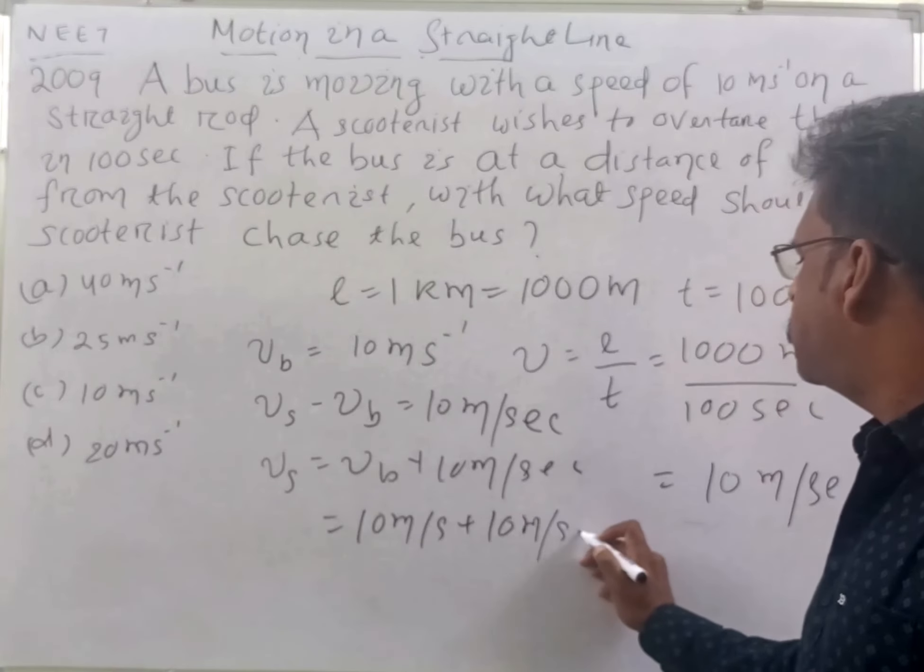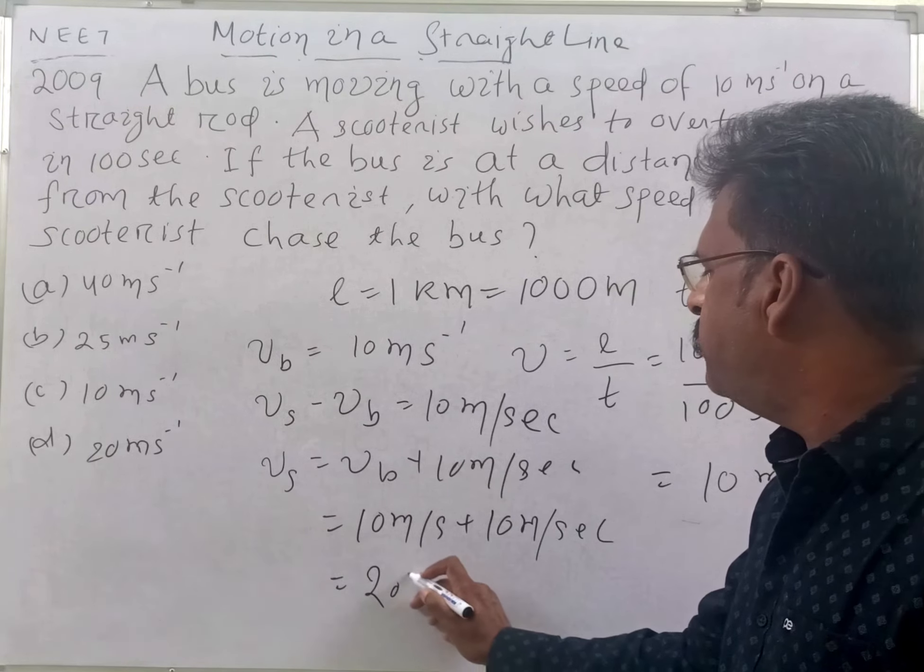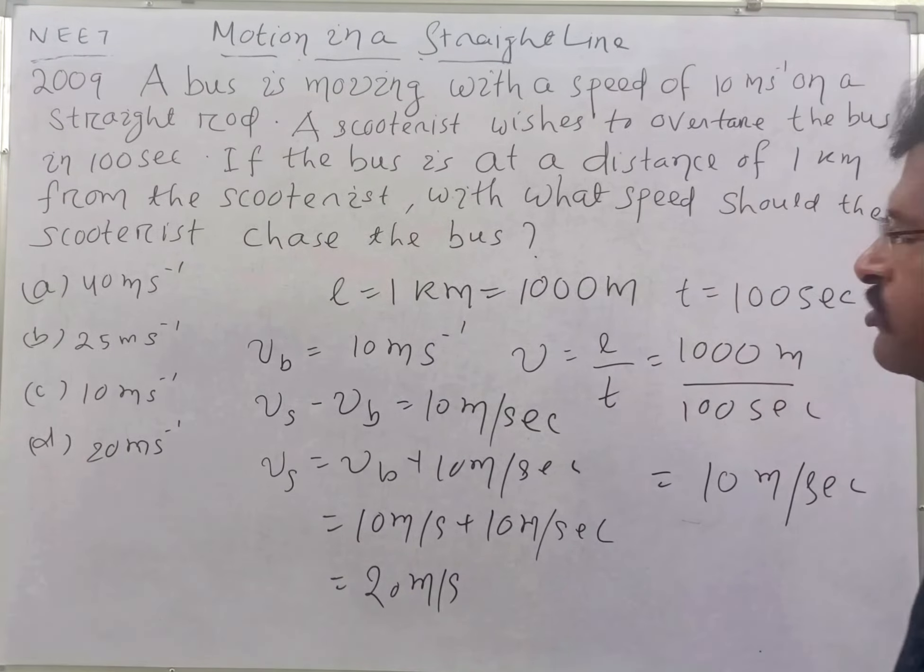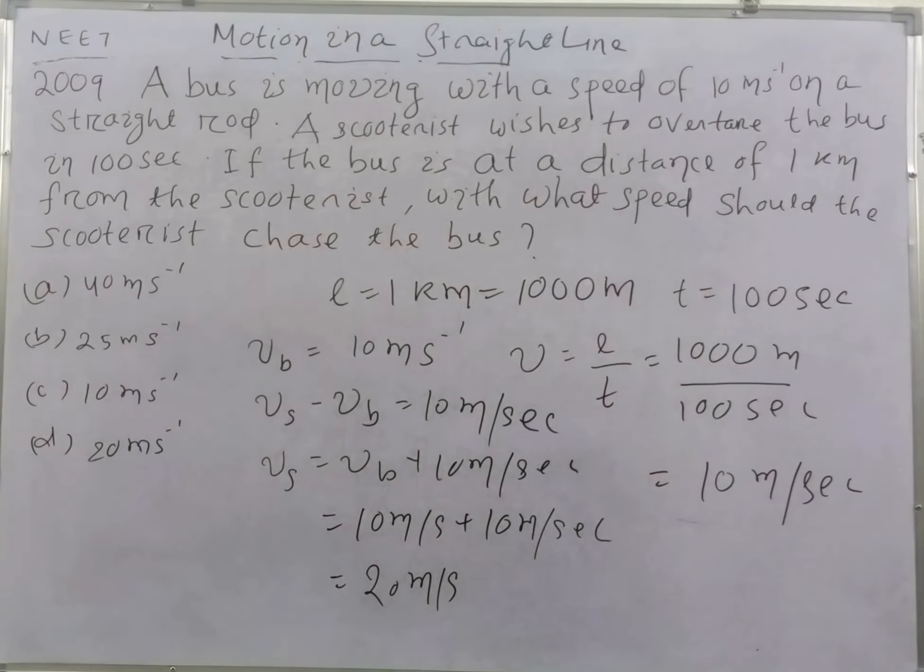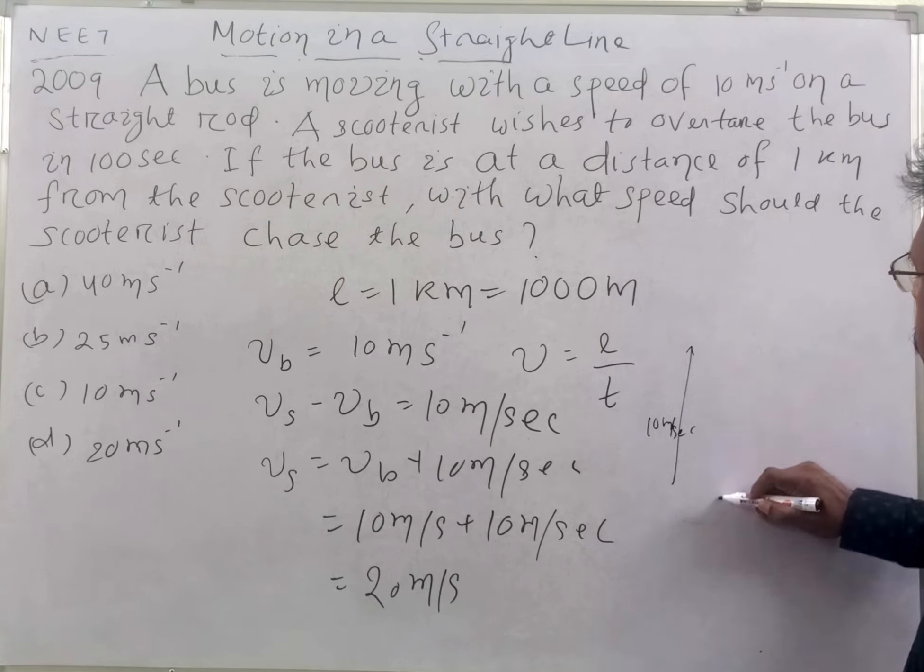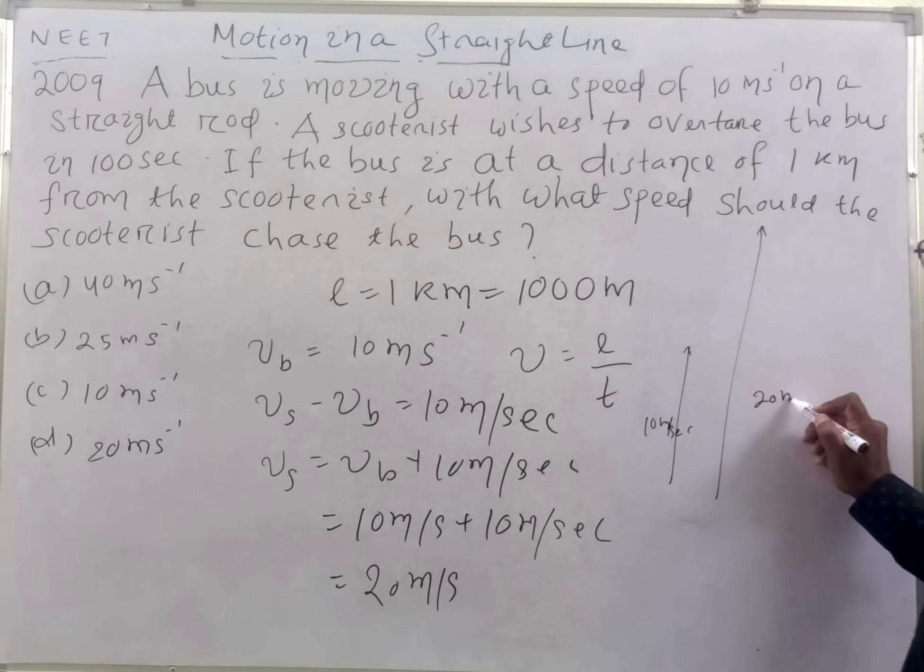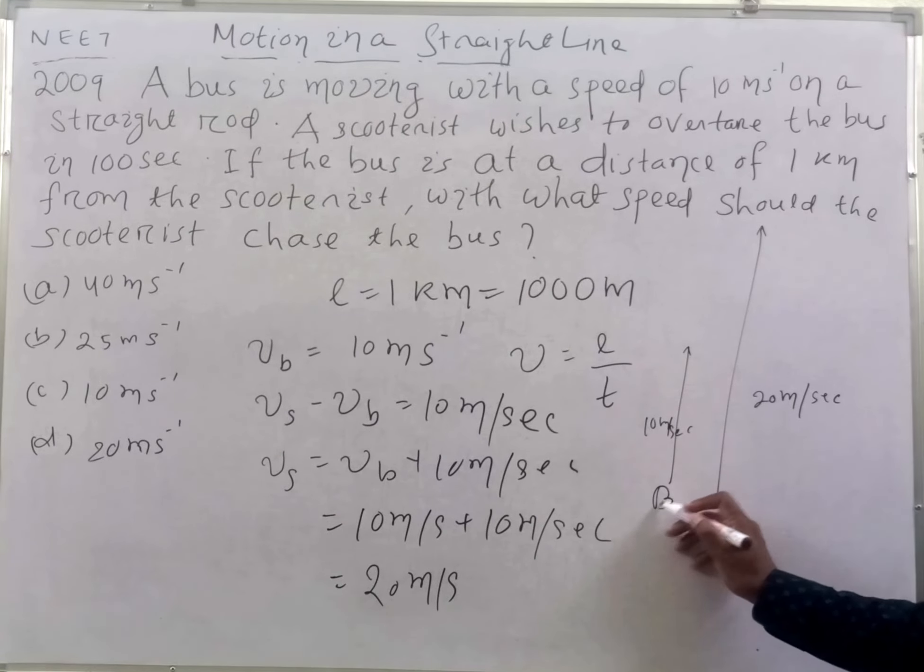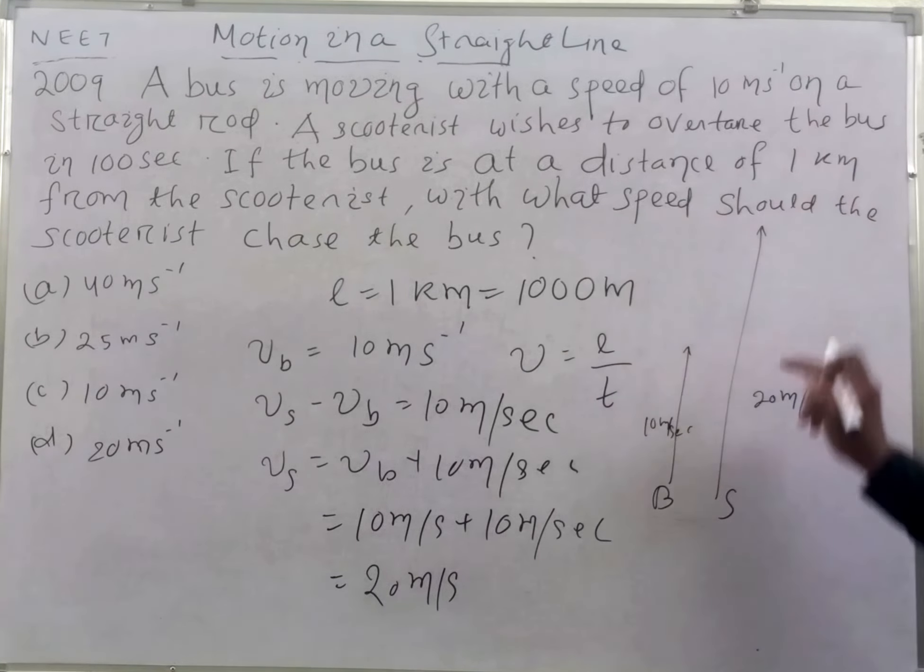The scooter velocity Vs is 20 meters per second. The bus is 10 meters per second. 20 minus 10 equals 10 meters per second, which is the relative velocity.